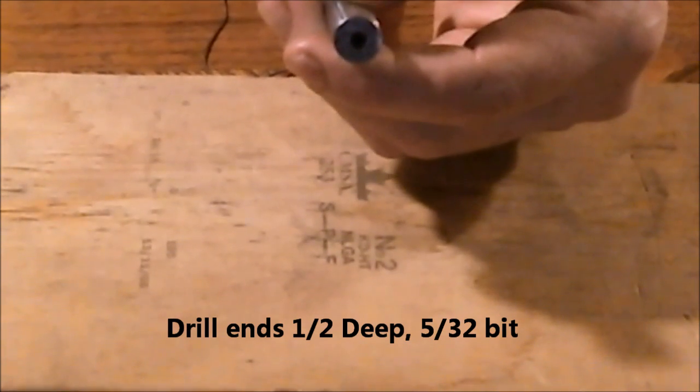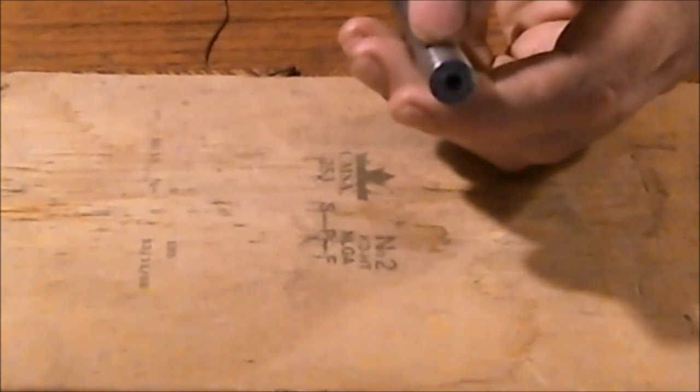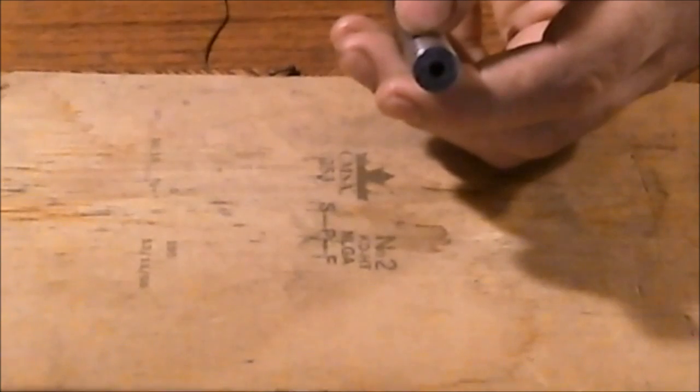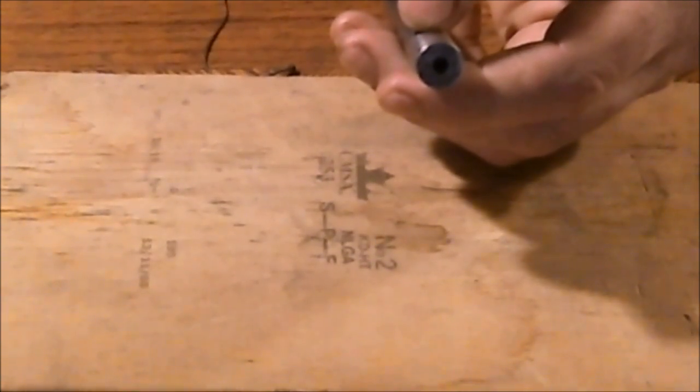Next, you're going to need to drill a hole on each end of the shaft, the rod, with a 5/32nds drill bit. You want to drill it approximately a half inch, five eighths deep.